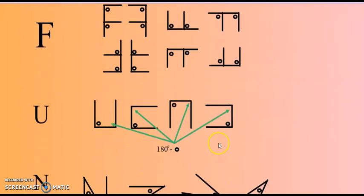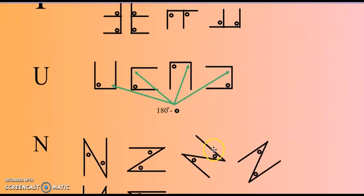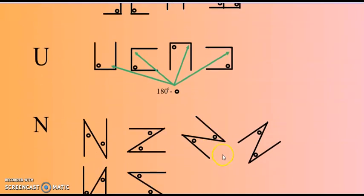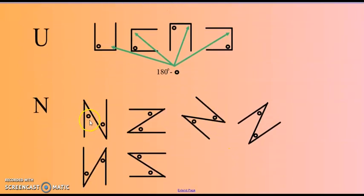That is how you find co-interior angles — remember they add up to 180 degrees, so 180 degrees minus one angle gives you the other angle. For alternate angles, they are on either side of the transverse line but between the parallel lines, and they will be equal in size.